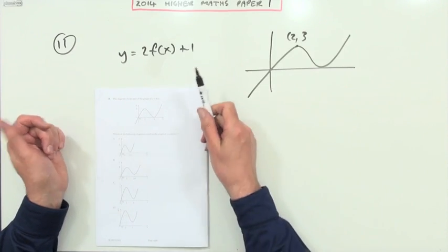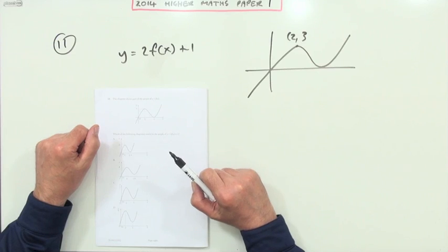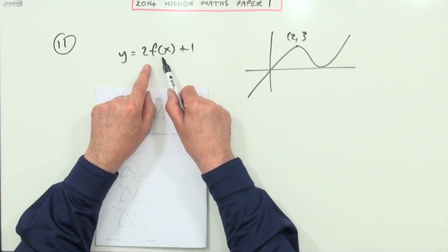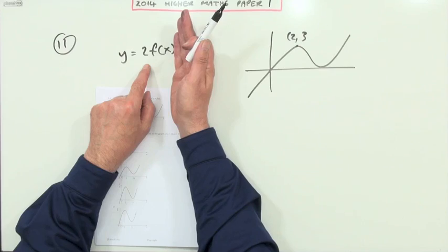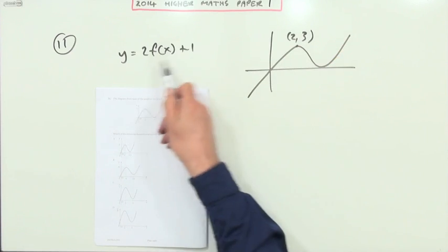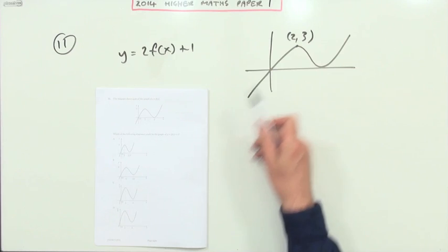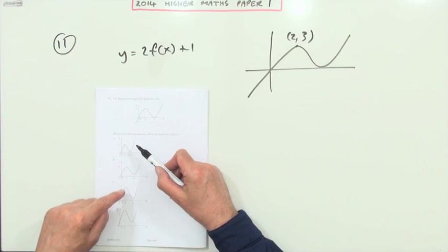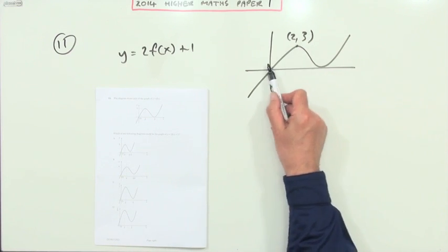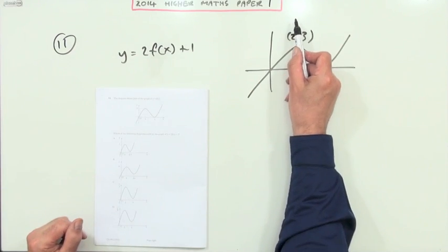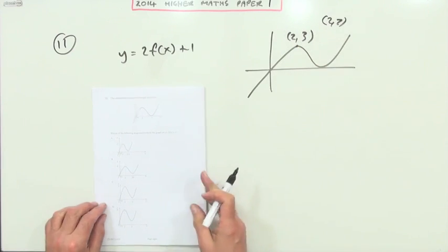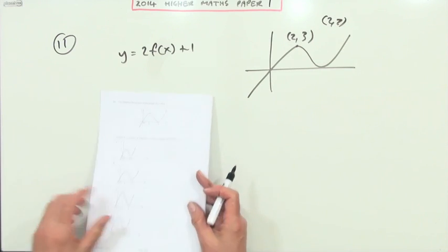Number 11: transformation of a graph. Looking at what the transformation does — it doubles the height, so it's stretched to twice the height, and then lifted up one. It's not moving across at all. The key point mentioned in all the answers is where a specific point goes. It would still be two along, but stretched to twice the height it goes to six, plus another one — so it goes to the point (2, 7). The only answer with (2, 7) is answer C.